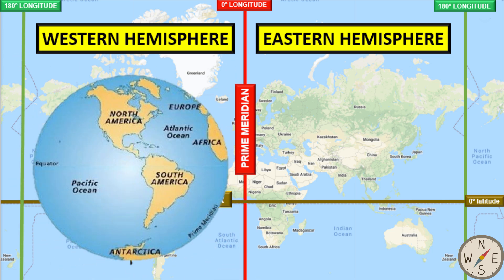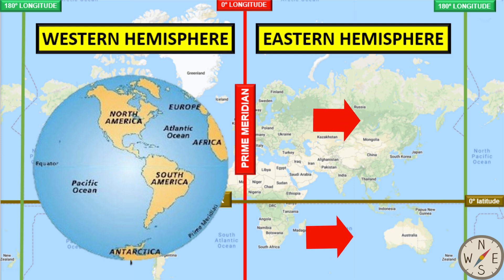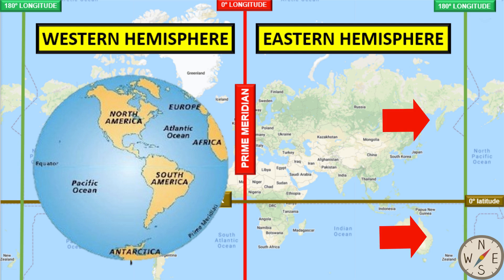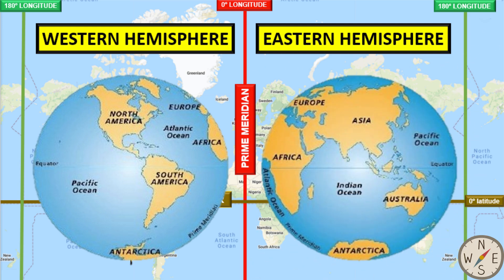The western hemisphere includes North America and South America, and also portions of Africa, Europe, Antarctica, and Asia. The eastern hemisphere lies east of 0 degrees longitude and west of 180 degrees longitude. It includes almost all of Europe, Africa, Antarctica, and Asia, and all of Australia.